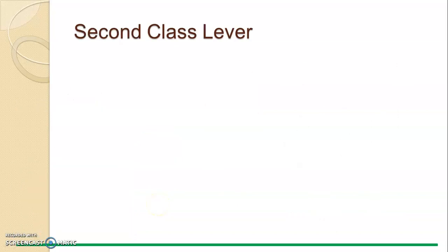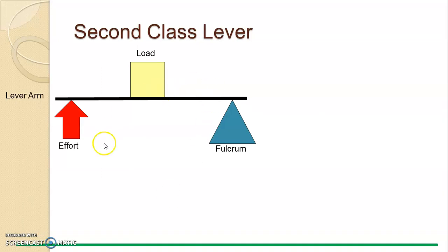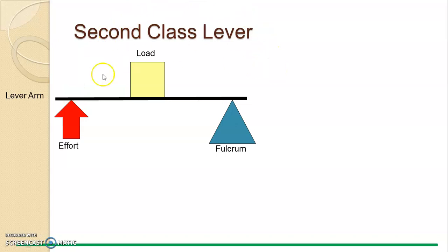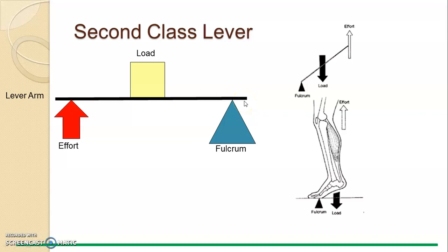Moving on to the second class lever. L is second in FLE equals one, two, three, so the load is in the middle. The pivot is at one end, and the effort pushes the rigid bar. Imagine the bar moving clockwise — the effort pushes it up and over. In a stable position, the load and effort are equal forces, keeping it balanced.